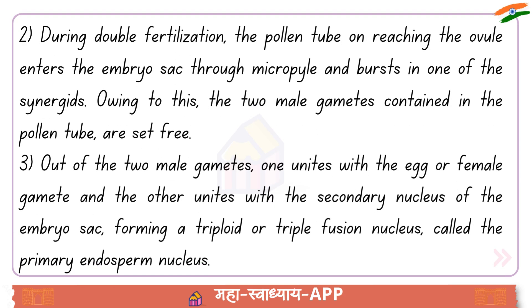During double fertilization, the pollen tube, on reaching the ovule, enters the embryo sac through the micropyle and bursts in one of the synergids. Owing to this, the two male gametes contained in the pollen tube are set free.